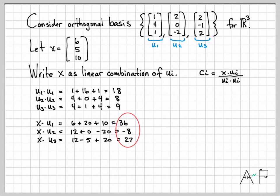So now I can go ahead and compute c₁. So c₁ is going to be 36 divided by 18. And I've already computed those factors, which is 2. And c₂ is going to be negative 8 divided by 8, which is negative 1.